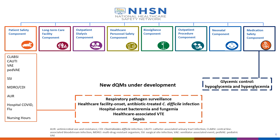This diagram on your screen displays an overview of new digital quality measures under development at NHSN. Several DQMs will have modules located within the patient safety component, including measures for respiratory pathogen surveillance, healthcare facility onset antibiotic-treated C. difficile infection, hospital onset bacteremia and fungemia, healthcare-associated VTE, and sepsis. NHSN is also developing two new glycemic control measures for medication-related hypoglycemia and hyperglycemia, which will be located in a new medication safety component.